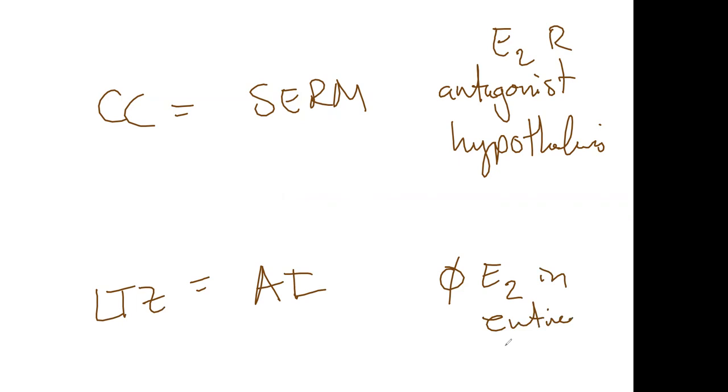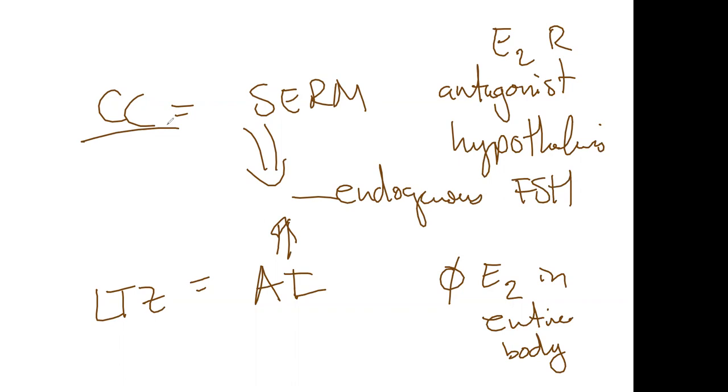They work differently, but their mechanism of action results in the same thing, which is you get this endogenous surge of FSH. One simple way to put it is clomiphene tricks the brain into thinking there's no estrogen around, so it works directly at the level of the brain. The brain pours out more FSH.